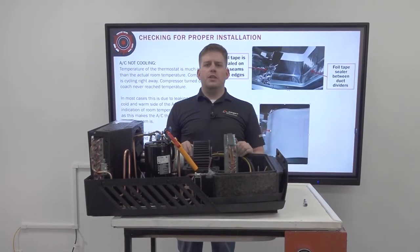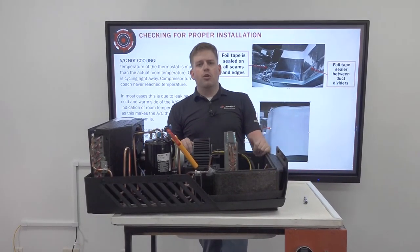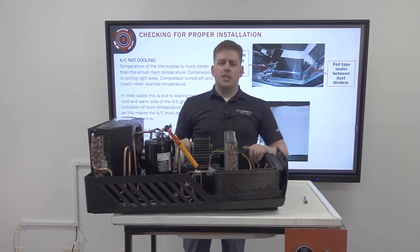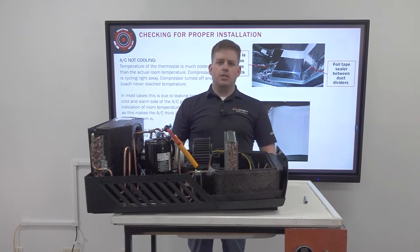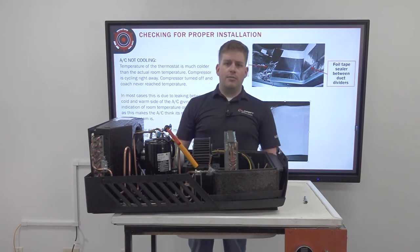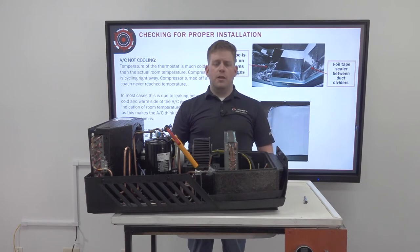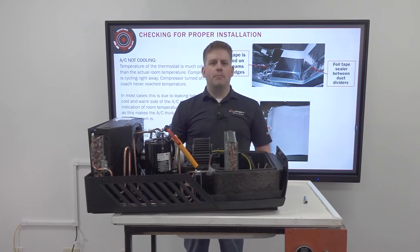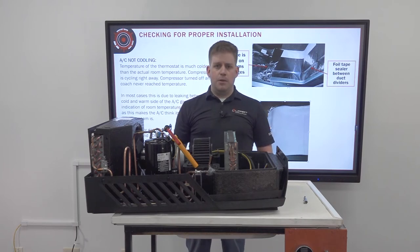To know if your amp draw is within spec, compare it to the RLA of the compressor found on the data tag. RLA stands for rated load amps — the amount of amperage the compressor pulls at exactly 95 degrees ambient temperature, 50% humidity, and 115 volts AC. For every 10 degrees warmer, the compressor pulls one additional amp; for every 10 degrees cooler, it pulls one fewer amp.